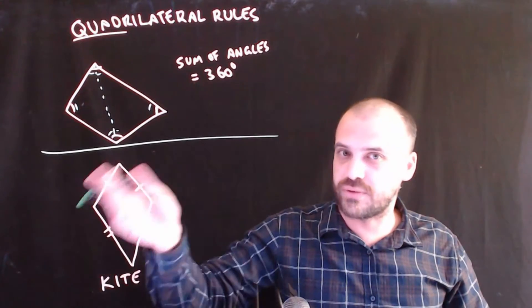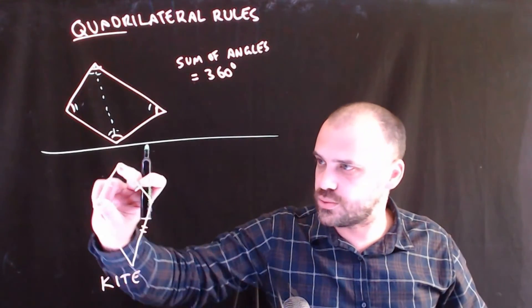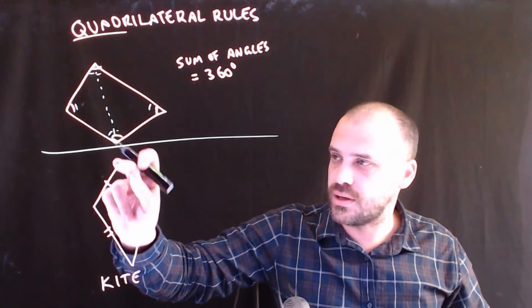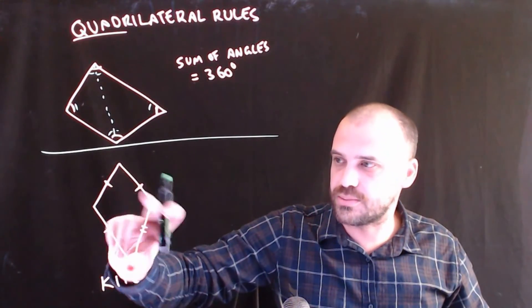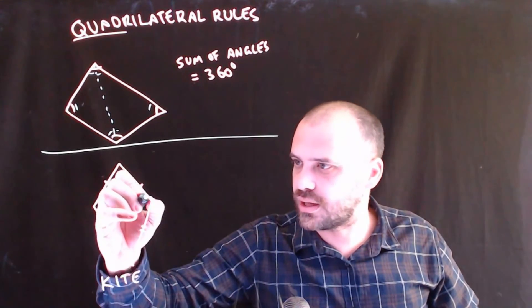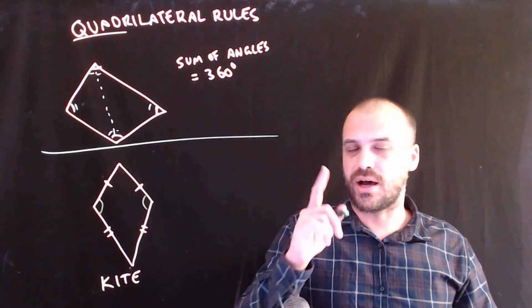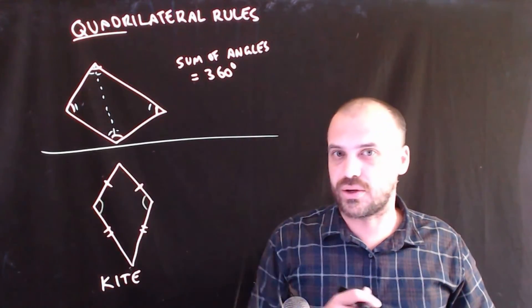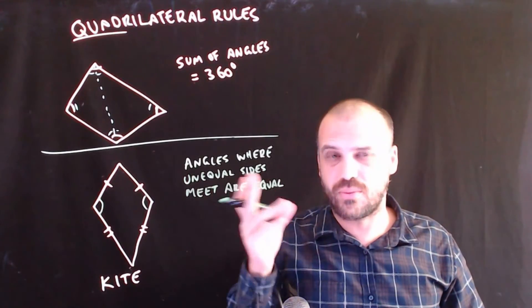Now, an interesting rule is the one for the kite here. A kite is one where there are two equal sides meeting at a point and two other equal sides meeting at a point. In a kite, this angle here and this angle here are always equal. It's not very hard to see why this is.